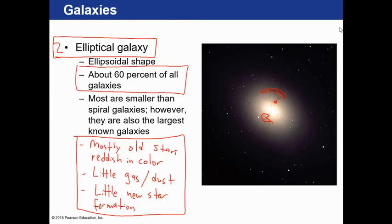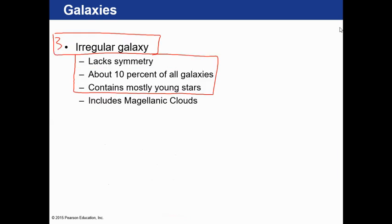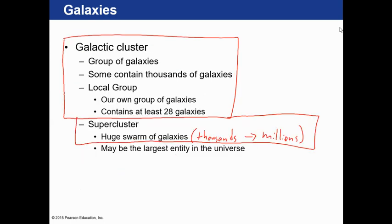Another type of galaxy is elliptical—actually about 60% of all galaxies are elliptical. And finally, there are irregular galaxies, which just don't fit any pattern—about 10% of all galaxies are irregular. There are even groups of galaxies: at least 28 galaxies are in our own group, the local group. There are also clusters of thousands and even millions of galaxies held together by their own respective gravities.